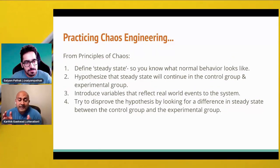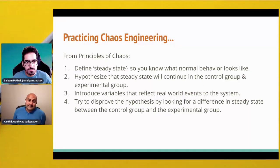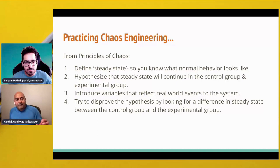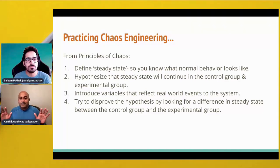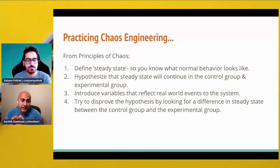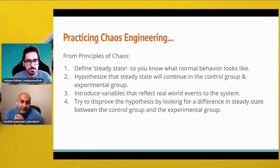So, practicing chaos engineering in the real world — how do we actually make this happen? For the principles of chaos, you're first trying to define a steady state, so you know what normal behavior looks like. Then you take your hypothesis and hypothesize on the steady state, which will continue for both your control group and your experimental group. Now that you have two groups, you start introducing variables to reflect real-world events. In the Kubernetes space, you might start to delete pods or take a node away. You inject real-world chaos, and then try to disprove the hypothesis by looking at the difference in steady state between the control and experimental group.